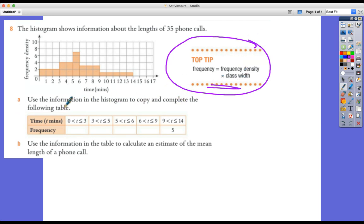Use the information in the histogram to copy and complete the following table. So the first bar we've got is this rectangle here and the time it refers to is 0 to 3 minutes. We're actually talking about the lengths of 35 phone calls we should mention. So what is the class width first of all is obviously 3. And the frequency density, the height of this in this case on this histogram is 2.